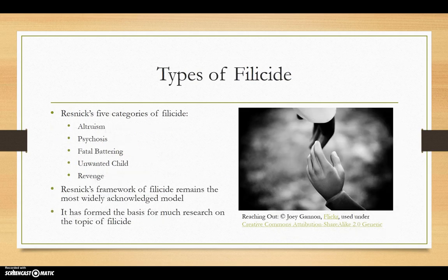Philip Resnick developed his five factor model for filicide in 1969. It included the following categories: altruism, where the parent truly believes he or she is doing the right thing by the child; and psychosis, where the parent is mentally ill and loses touch with reality.